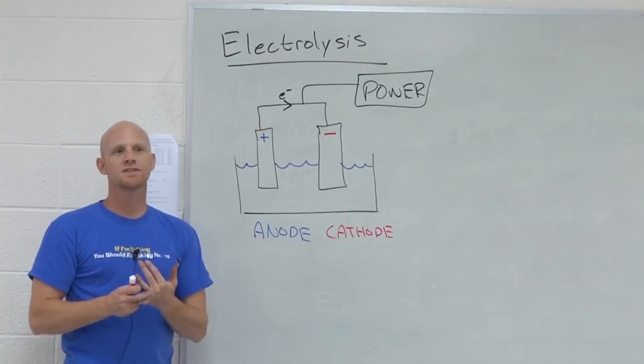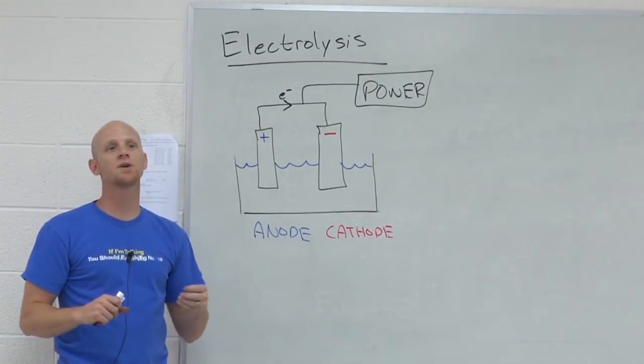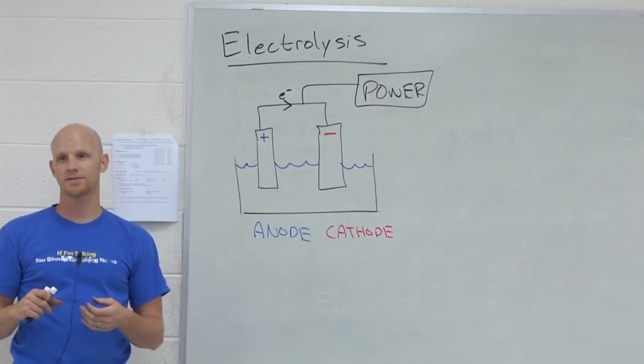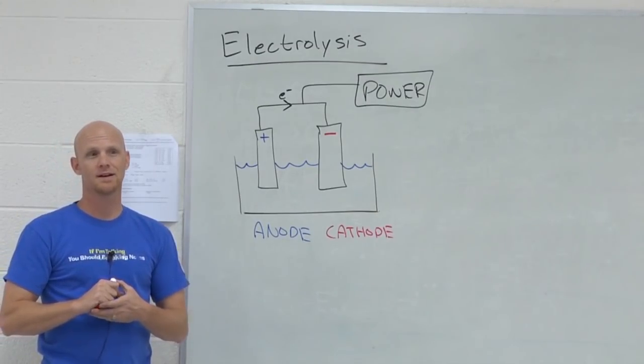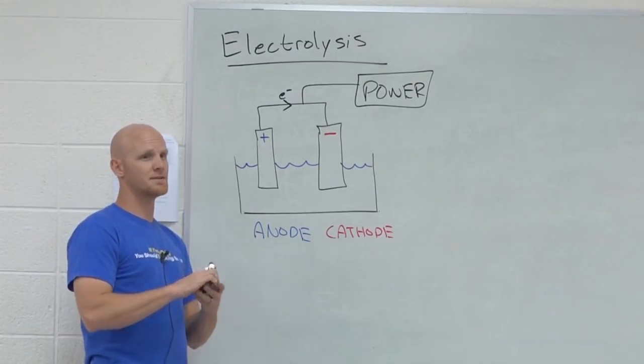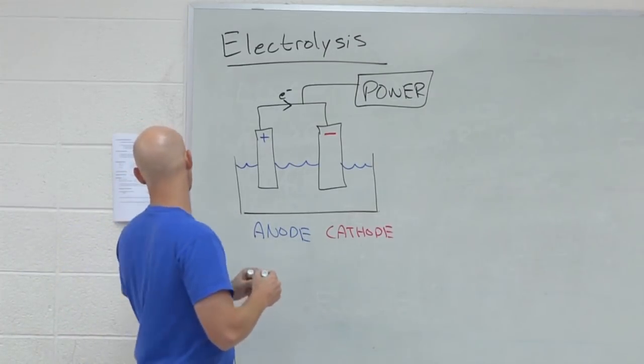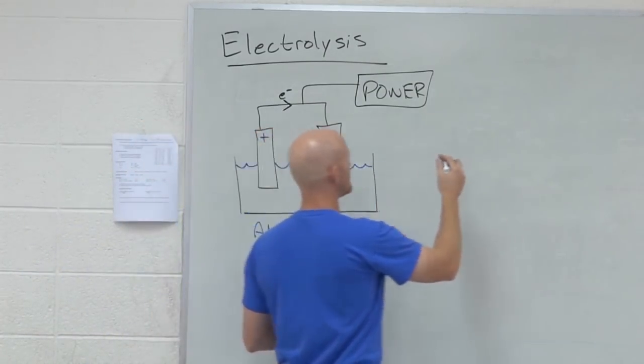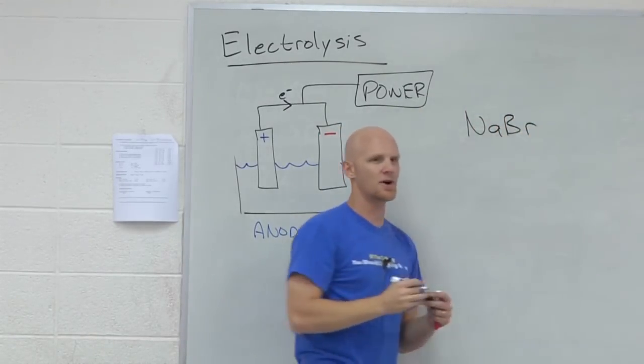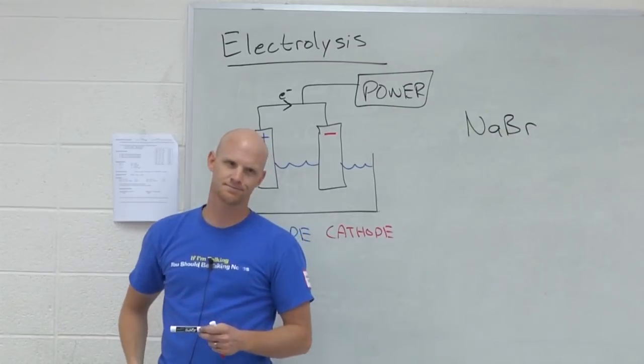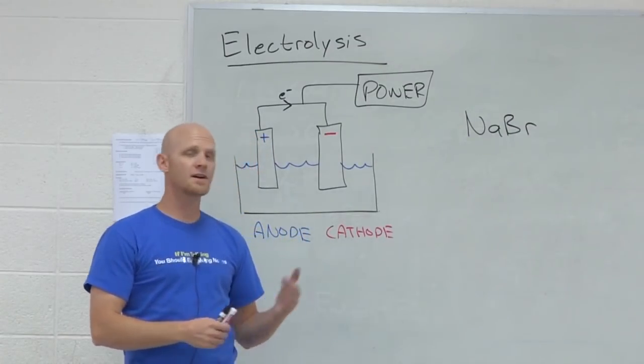Usually when we do electrolysis, in this class we'll treat it as doing electrolysis on a salt. When I say salt, what do I mean again? Ionic compound. Ionic compound. So in this case, the one on your handout, we're going to look at the electrolysis of NaBr, electrolysis of NaBr, sodium bromide, nice ionic compound, good salt.